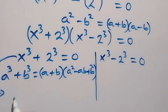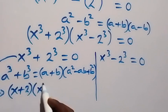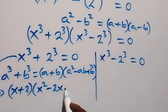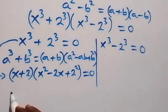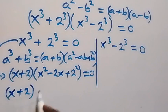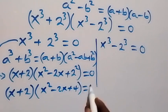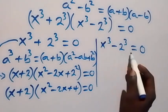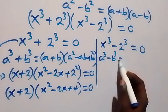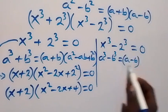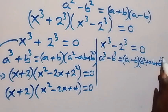Then this implies x plus 2, times the bracket x squared minus 2x plus 2 squared, equals to 0. That is x plus 2, times x squared minus 2x plus 4, equals to 0.